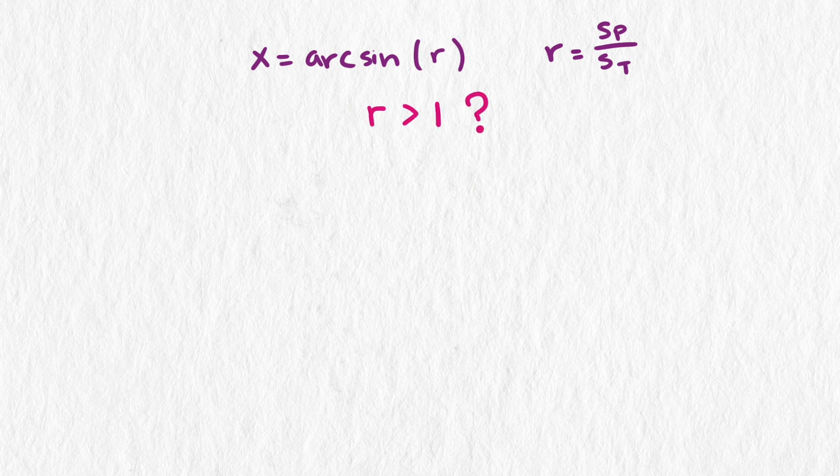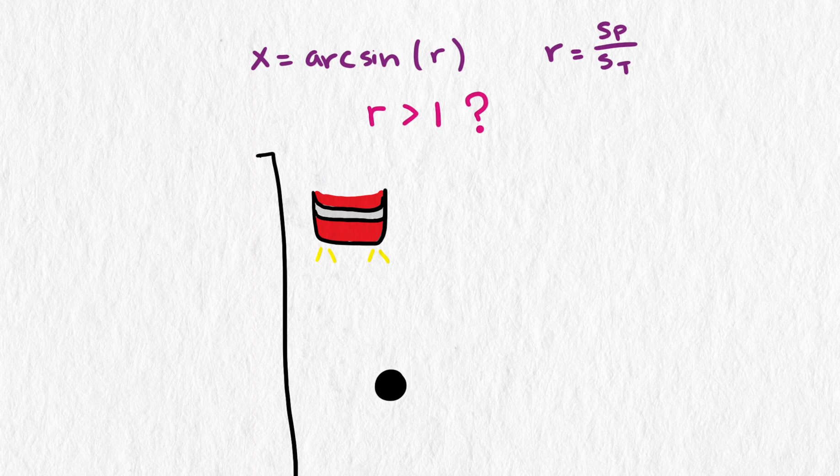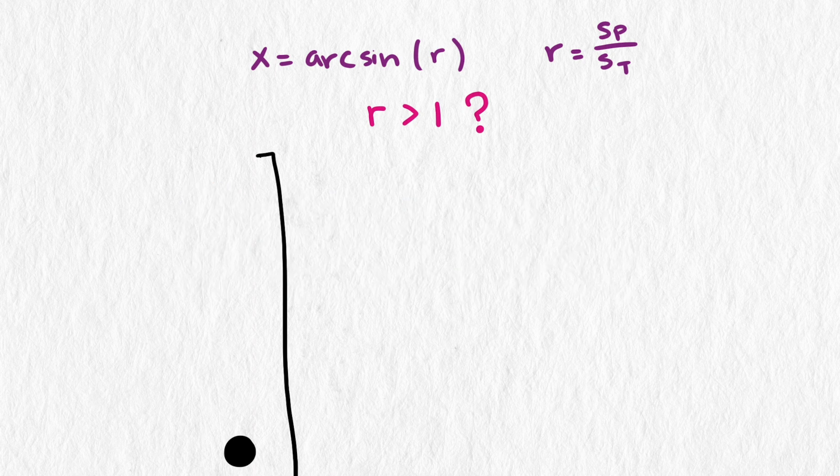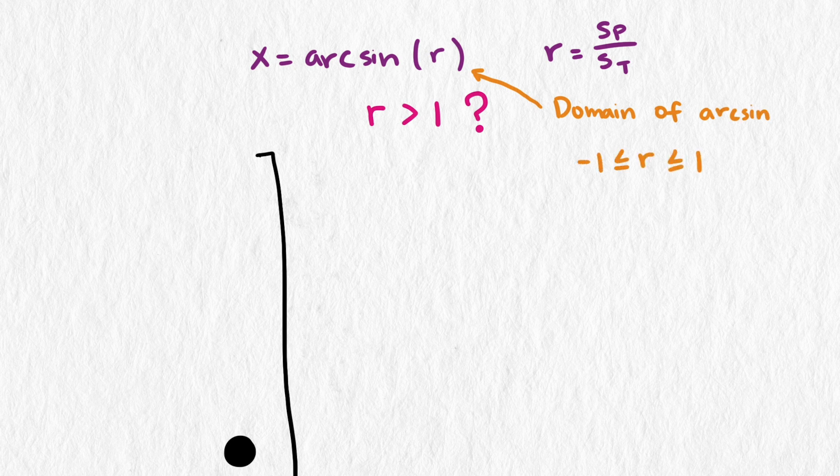What does it mean if r is greater than one? Then the pedestrian is faster than the truck, and the pedestrian can just run away from the truck and take their time getting to the curb. It's not realistic or interesting. In fact, the model does not give an optimal angle for this situation since the sine ratios are between one and a negative one.